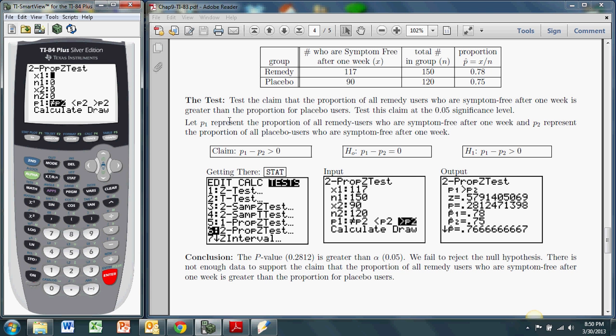It asks me for the number of successes from the first set of trials, or the first sample. So we'll let that be the remedy users. That's 117 out of the sample size of remedy users, which is 150. And for the placebo group, we have 90 successes. 90 people were symptom free after one week. And that's from a sample size of 120.